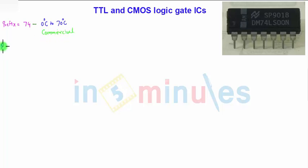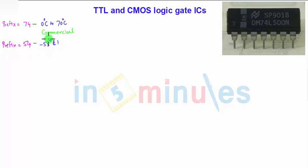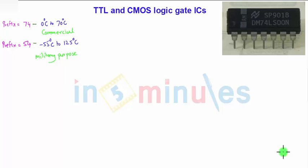You will also find the prefix 54 — so instead of 74, the prefix is 54. This is used for temperatures ranging from minus 55 degrees Celsius to plus 125 degrees Celsius, and is particularly used for military purposes. Both ICs work the same way whether the prefix is 74 or 54, but their operating temperature range is different.